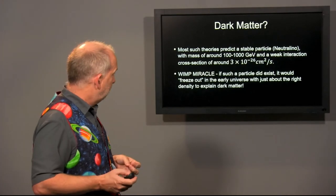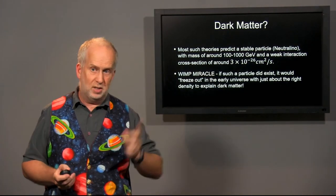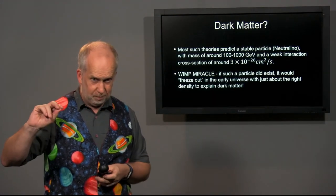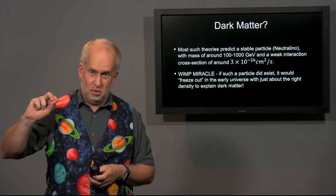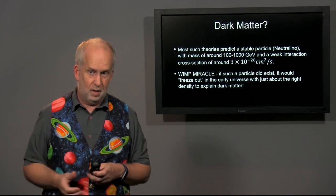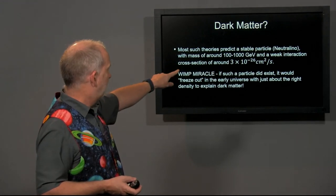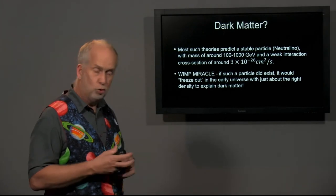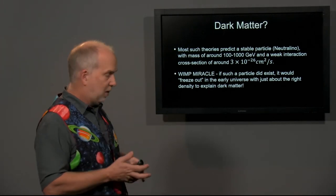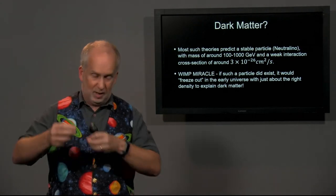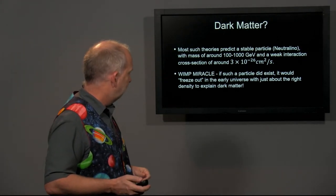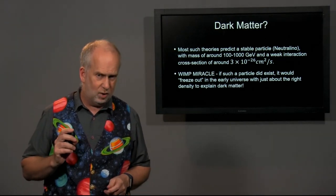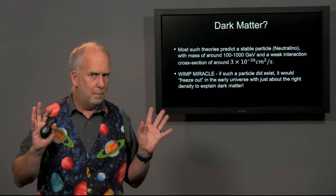And, could it explain dark matter? Well, these theories do predict that there should be a light particle, probably called the neutralino, which has about the right properties to produce dark matter. It'll have a mass in the range of about 100 to 1000 gigaelectron volts, which is a good fit to the data of dark matter. It's not too light like neutrinos. And a cross-section, that means the probability of one hitting something else, of very small values, 3 by 10 to the minus 26 centimeters squared per second. But it just happens that those numbers produce what's called, in the field, the WIMP miracle.